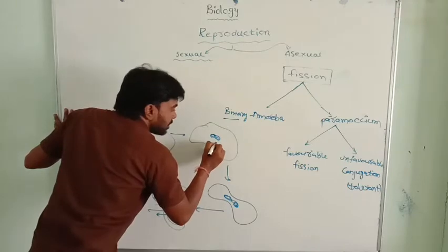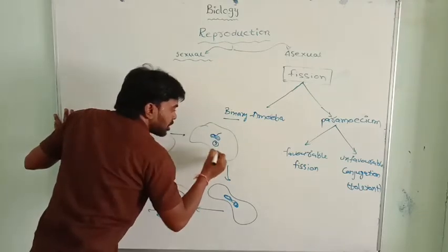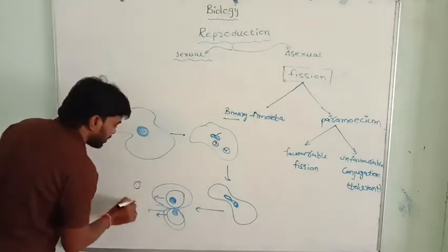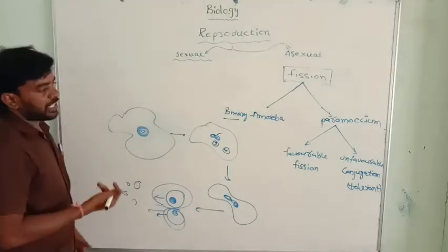By binary fission, the amoeba produces offspring. And sometimes the nucleus will be splitting into three or four, more than two. It is multiple fission. Four ways will come. It is multiple fission.